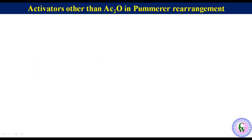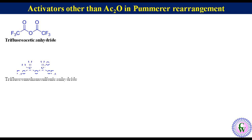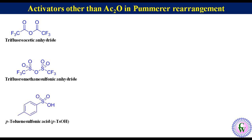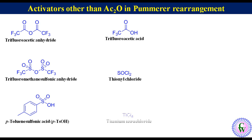Activators other than acetic anhydride in Pummerer rearrangement: so far we have discussed acetic anhydride as an activator, but there are several other activators like trifluoroacetic anhydride, trifluoromethane sulfonic anhydride, para-toluenesulfonic acid, trifluoroacetic acid, thionyl chloride, titanium tetrachloride, etc.